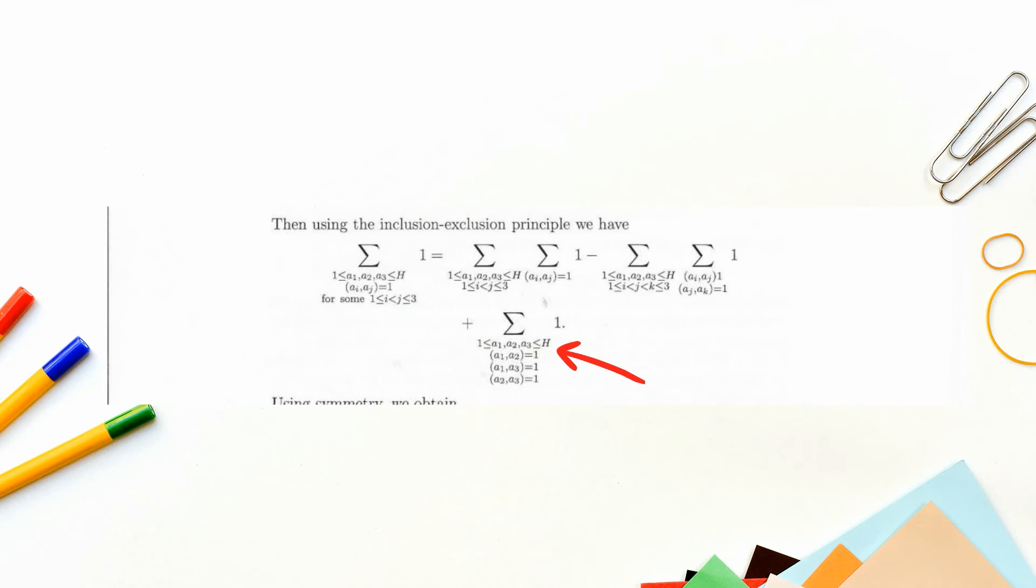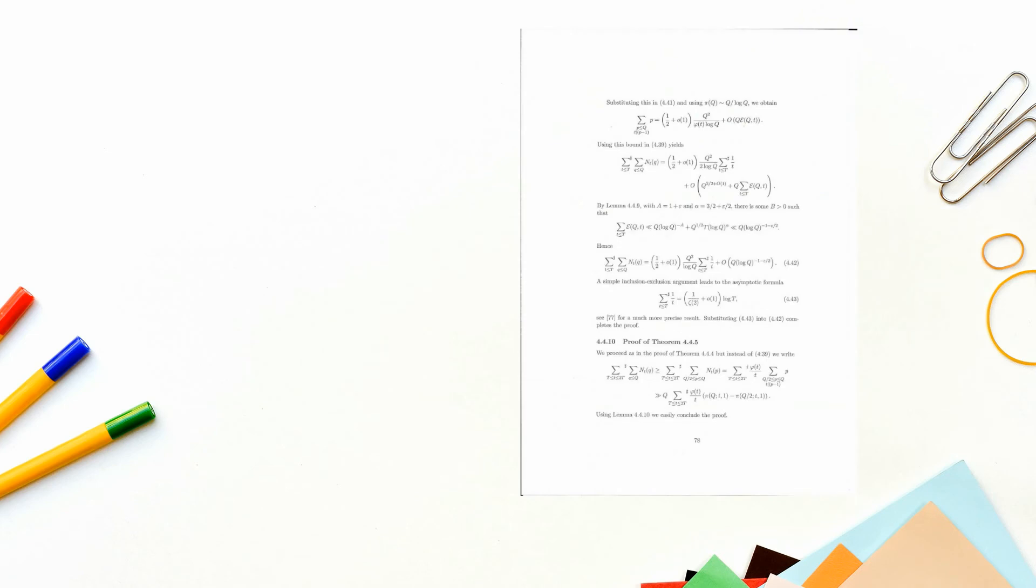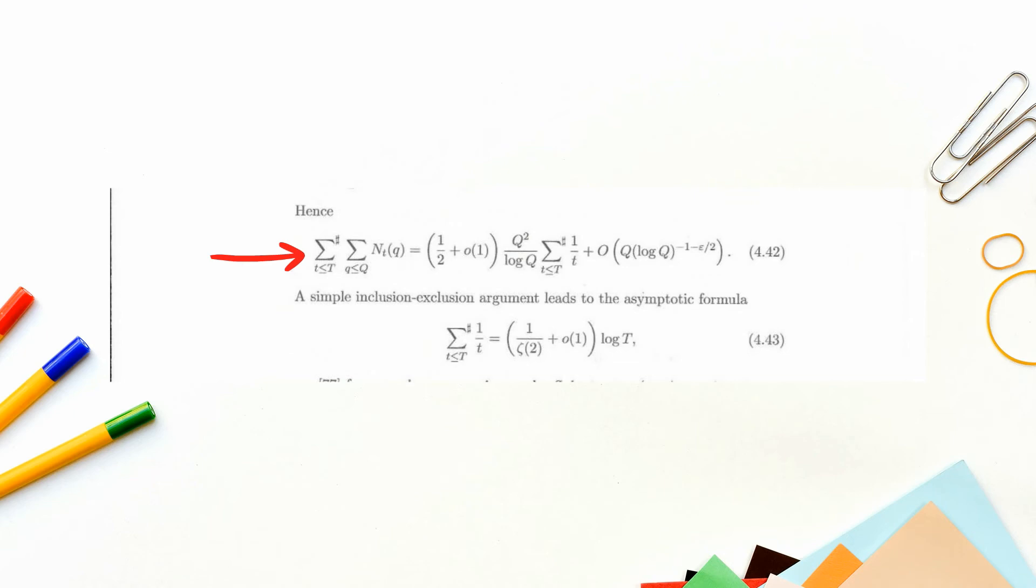Another time I was working with a very experienced mathematician on this paper, and we got up to this line, and then I went off and I did about a three-quarter page inclusion-exclusion proof to get down to this line. Anyway, when I showed it to him, he said, let's just write here, a simple inclusion-exclusion argument leads to the asymptotic formula. And sure enough, I got through, passed the reviewer, and it's now in the published paper.